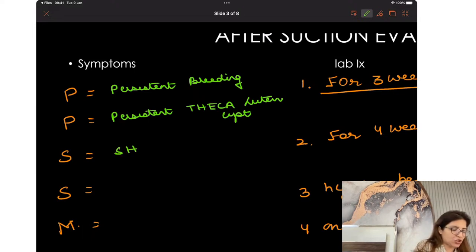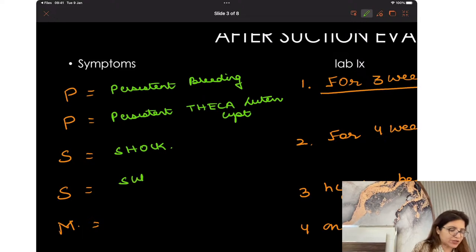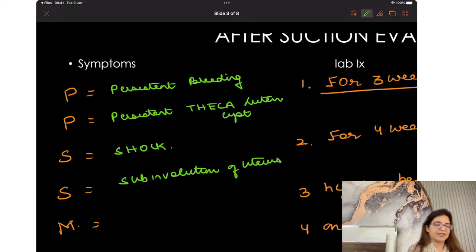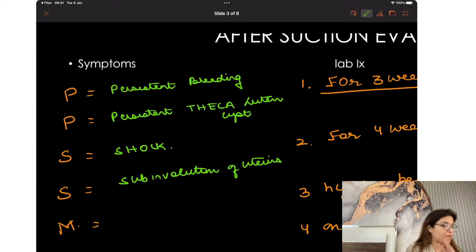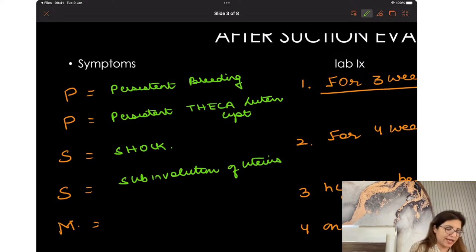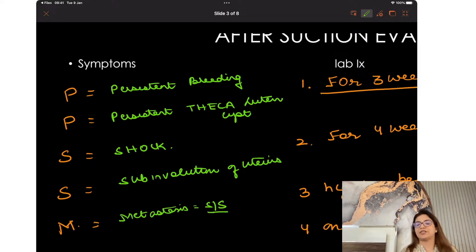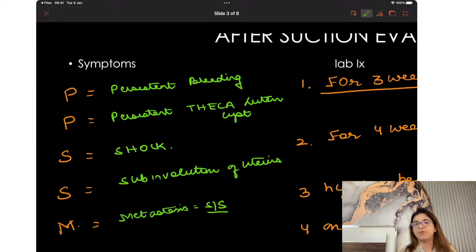Or if your patient goes into shock. Or if there is sub-involution of uterus — that is S for shock and sub-involution. Two P's: persistent bleeding and persistent theca lutein cyst. And M stands for metastasis — if you are getting signs and symptoms of metastasis.